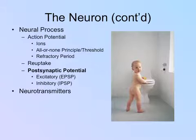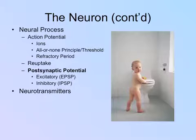Neurotransmitters are the specific chemical messengers that send messages between neurons. There are different types of neurotransmitters we'll cover in class, including some not in the Myers textbook. Those are the basics of neural communication — bring your questions to class.